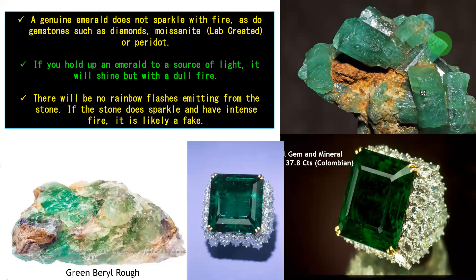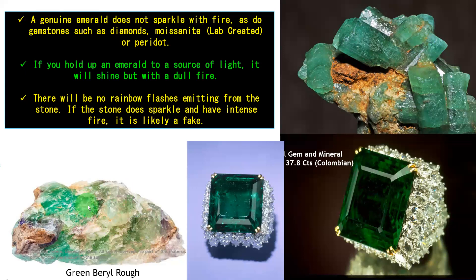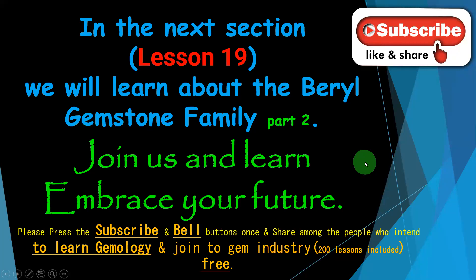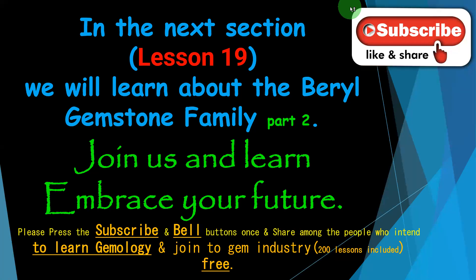Now look at the mother stone and the growth of bulk emerald crystals. This is a 37.8 carat Colombian emerald ring with diamonds — look at the colour. This is green beryl rough with mother stone. Please subscribe and press the bell icon, give a like, share, and write a comment. In the next section — lesson 19 — we will learn more about the beryl gemstone family part 2. Join us and learn to embrace your future. Thank you.